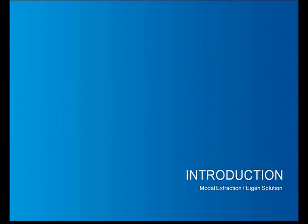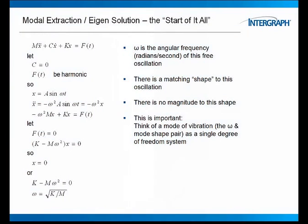Now, the introduction: modal extraction, eigen solution. Eigen is German for characteristic. It's not necessarily an engineering term, it's a mathematical term, characteristic values in matrix operations. Well, this will be the extent of the math that we're going to run today. I have an equation here summing all the forces and moments, forces on a body. We've got our acceleration term, our damping term, our stiffness term, and it's balanced by some applied load.